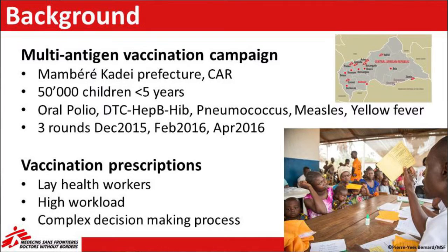MSF Switzerland decided to make a multi-antigen preventive vaccination campaign in the Central African Republic in Manbere-Kadai Prefecture. We wanted to vaccinate 50,000 children under five years old with five different vaccines including oral polio, DTC, hepatitis B, hemophilus influenza B, pneumococcus, measles, and yellow fever vaccine. We wanted to do three rounds with an interval of two months between each round, starting the first round in December 2015.